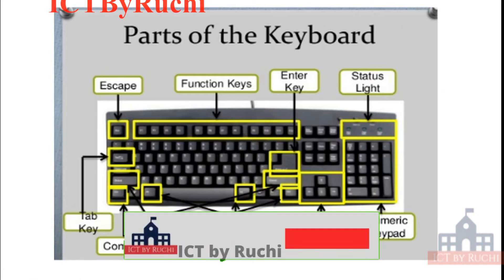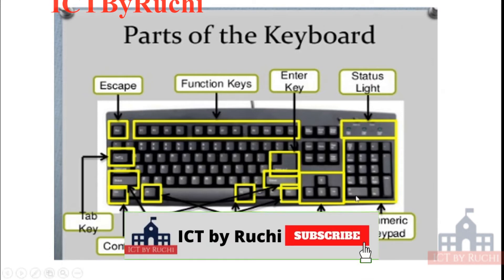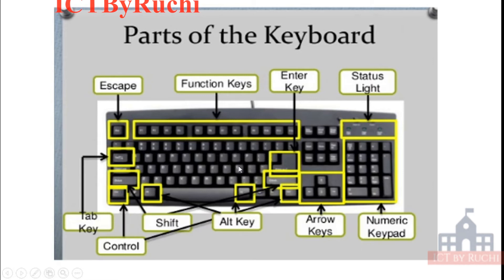As we all do typing using keyboard, the keyboard has majorly alphabet keys, A to Z keys, which is used for typing. You can see in the middle. Next, on the top, there is escape key. Escape key is to come out of some window, escape some operation.